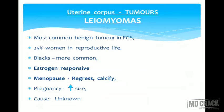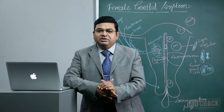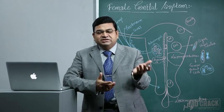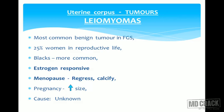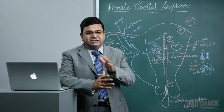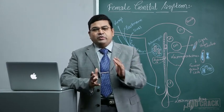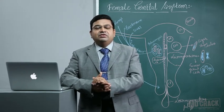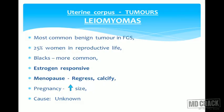Now the myometrial tumors. Leiomyomas are the most common benign tumor in the female genital system — around 25% of women in their reproductive age will develop leiomyomas, commonly called fibroid uterus. They are more common in the Black population, are estrogen-responsive, and can regress after menopause. They sometimes undergo calcification. In pregnancy, they characteristically increase in size and undergo a peculiar change called red degeneration of fibroids.